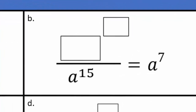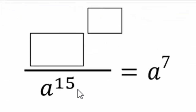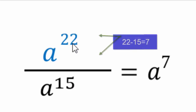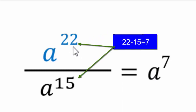In part B, the base should be a because the answer is a to the power something. 15 is on the denominator, so if you want 7, you need 7 more than 15 — so 22 has to be the exponent here. Because 22 minus 15 is 7.